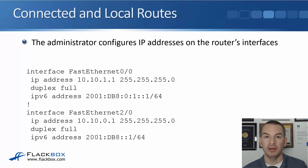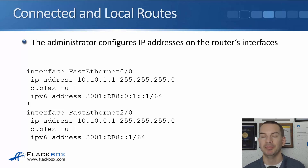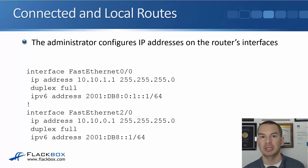The connected and local routes work the same way in IPv6 as they do in IPv4. In the example configuration, we've got a dual stack router, meaning it's running IPv4 and IPv6 at the same time. You don't need to do that — you could have a router with IPv4 only, IPv6 only, or both. When you run both, it's called a dual stack router.